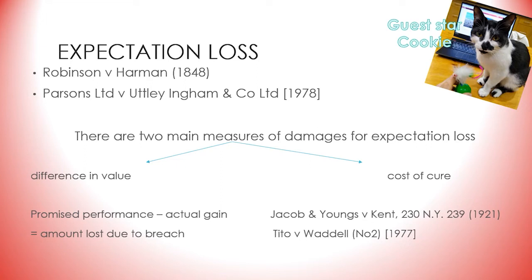Since the differences can be significant, how does one choose between the two measures? It could be that statute decides — for example, the Landlord and Tenant Act 1927 determines that the tenant's covenant to repair is assessed on the basis of diminution in value. The Sale of Goods Act 1979, section 53, says that diminution in value is the measure for defective goods. Also, case law could determine that cost of cure is the appropriate measure for building contracts when reasonable.